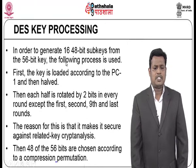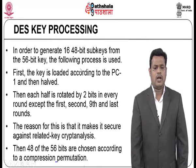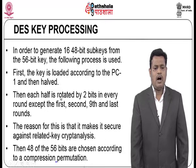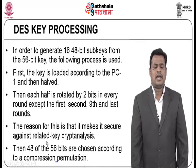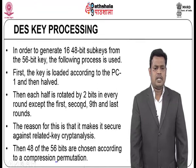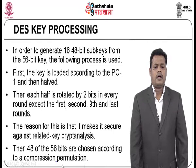This 56-bit key is then converted into 48-bit subkeys. First, the key is loaded according to PC1 (Permutation Combination 1), then it is divided into two 28-bit halves. Each half is rotated by 1 bit in the first, second, ninth, and last rounds, and by 2 bits in every other round. This makes it secure against related-key cryptanalysis. Then 48 bits out of 56 are chosen according to the compression permutation.